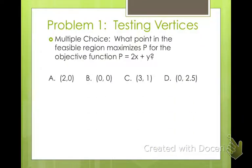So what point in the feasible region maximizes P for the objective function P equals 2x plus y? Now, if it maximizes, that means we want the biggest number, right? So what I'm going to do for these is just plug in x and y.